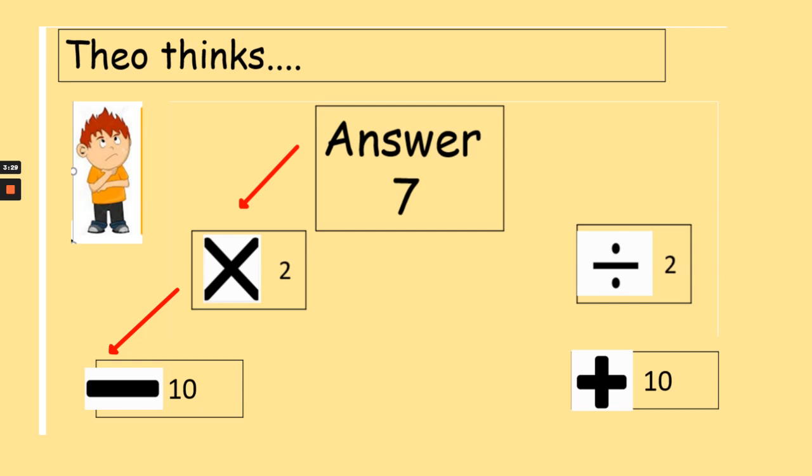Because if you work it the other way, 4 add 10 is 14, divided by 2 is 7. So you can see how it works.